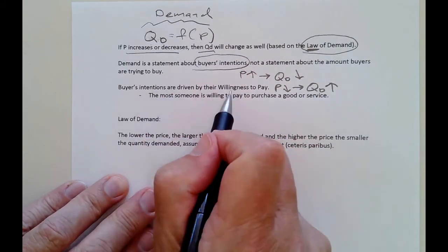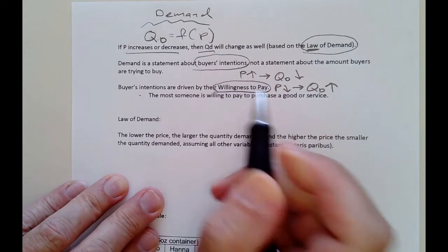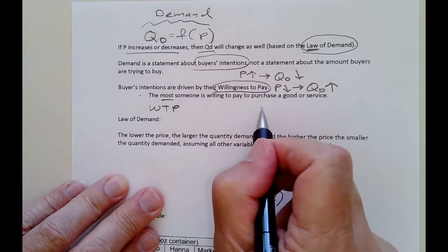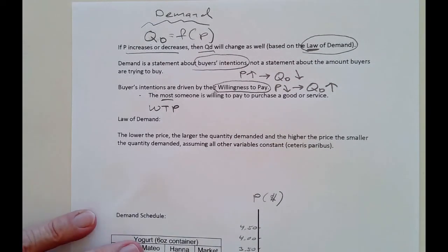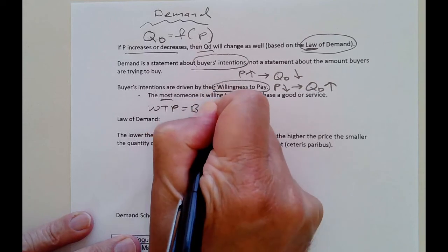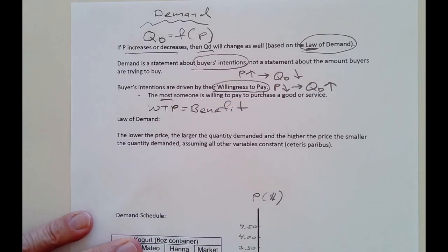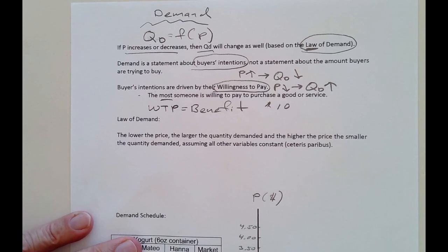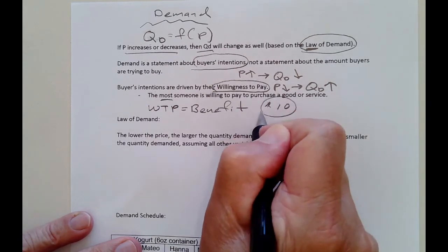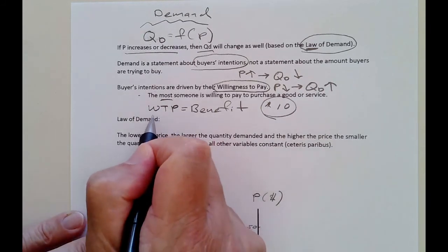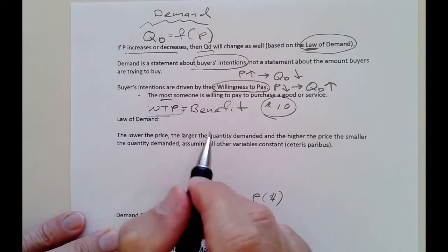Buyers' intentions are driven by their willingness to pay, or WTP. This tells us the most someone is willing to pay to purchase a good or service. It's not what you want to pay — what we want to pay is zero. It's the maximum you're willing to pay, and it gives us a measure of the benefit consumers get from the good. If you're willing to pay $10 for a cup of coffee, that coffee is worth at least $10 in benefit to you. So willingness to pay is a measurement of the highest price you're willing to pay to get a particular good.